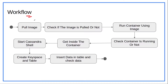This is the overall workflow that we'll be following to achieve our end goal, that is to install Cassandra utilizing Docker. The first step would be pulling an image. Second, we'll check that the image is pulled or not. Third, we'll run the container utilizing the image. Fourth, we'll check if the container is running or not. We will go inside the container, then start the Cassandra shell, create a keyspace and a table, insert data into that table and check the data. Now let's go step by step and do these things practically.